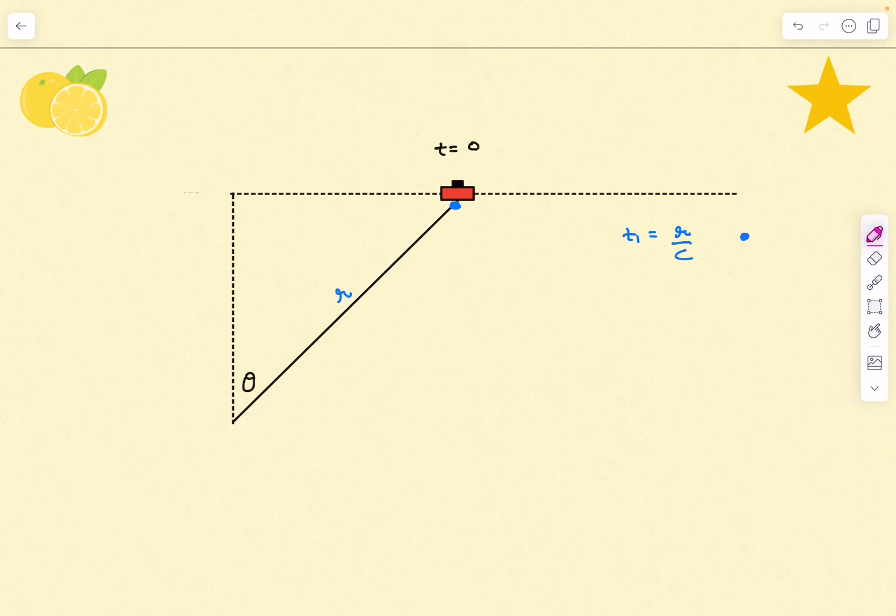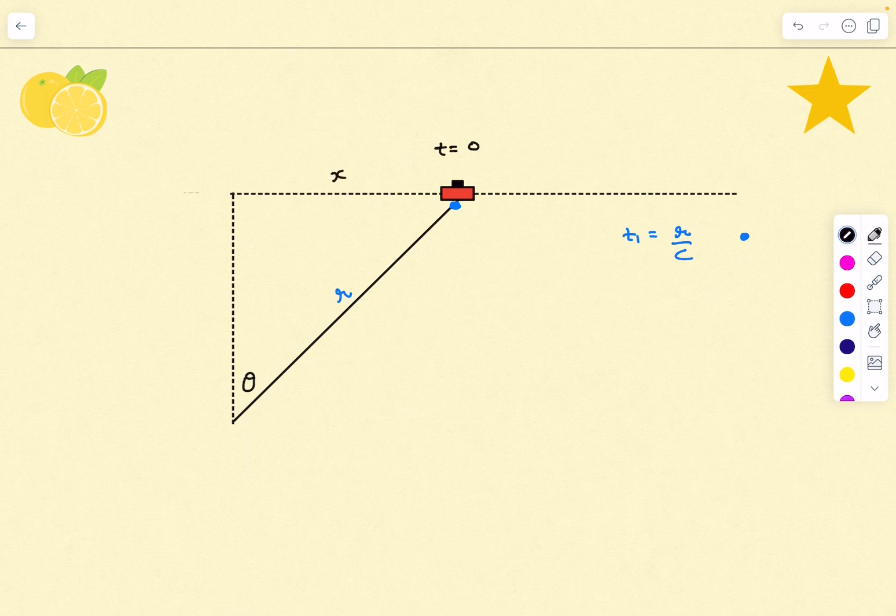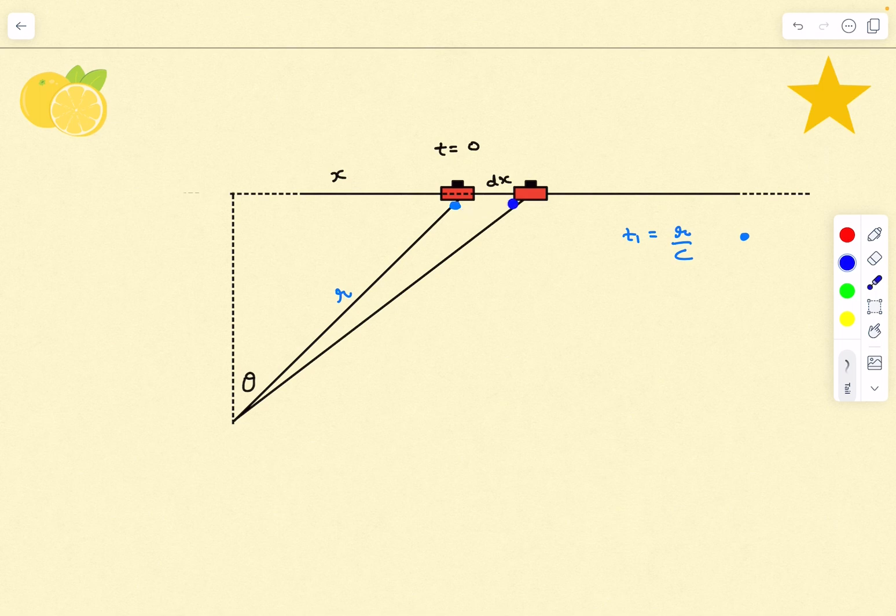Now let's talk about the next light pulse. Let's say this distance over here is x and the UFO has traveled some distance dx forward. As it is given in the problem that the UFO releases light pulses after very short durations, we can consider this dx distance to be very small.